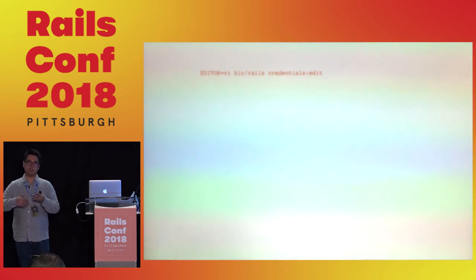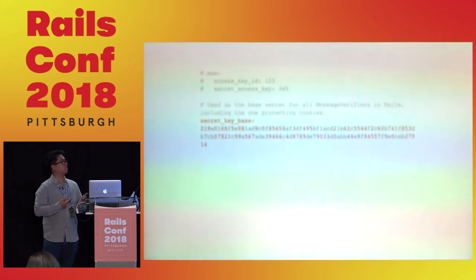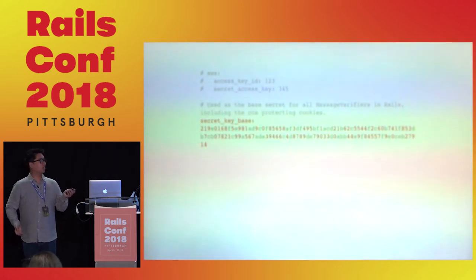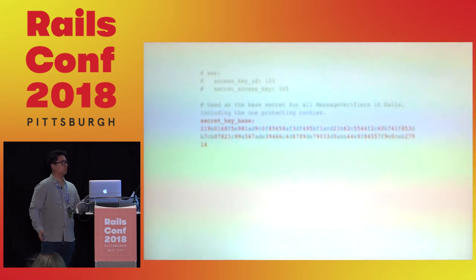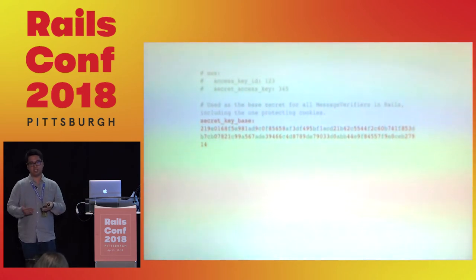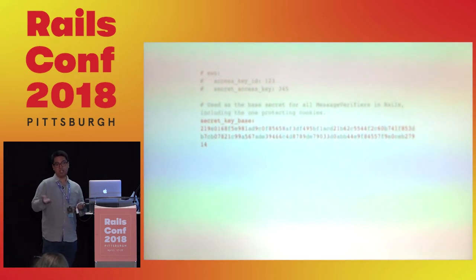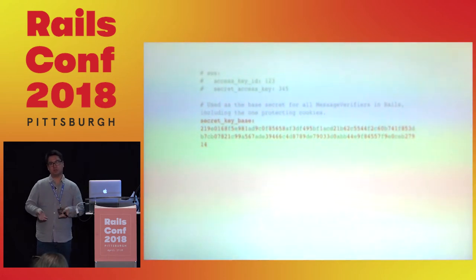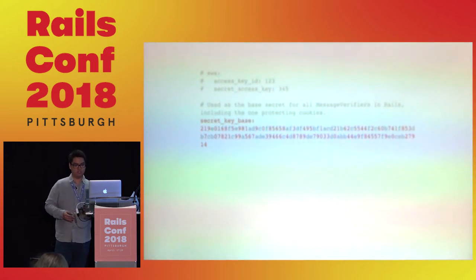Similar to Rails 5.1 encrypted secrets, you run 'credentials edit.' You don't run any setup code because if you create a new Rails 5.2 application, you automatically get a key. If you're upgrading, you can also run a setup command to generate the key. What has changed is it's not grouped per environment anymore — no development or production. Your secret key base automatically gets added, and there's no separate secrets.yaml generated on Rails 5.2. You're supposed to use this only in production; for development or staging, we'll talk about that towards the end.